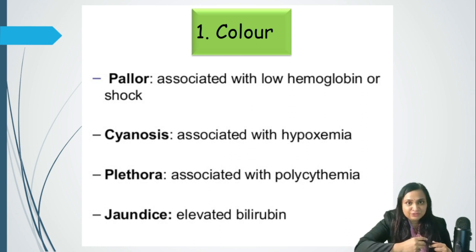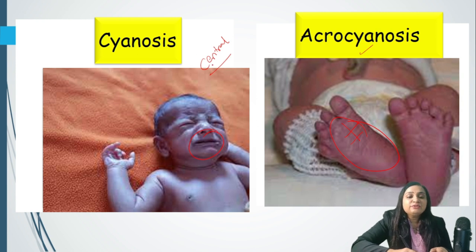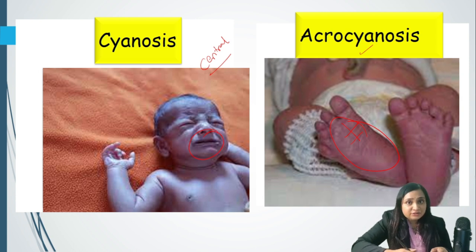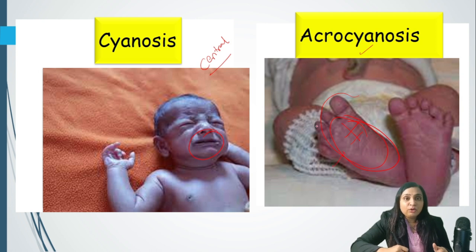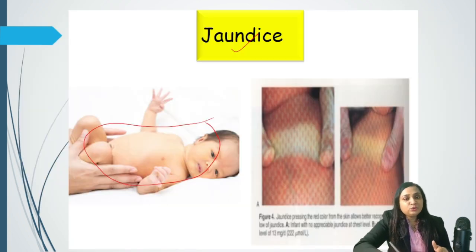In color, the important finding is cyanosis. If there is a bluish discoloration seen in a newborn, we need to differentiate whether it is central cyanosis or peripheral cyanosis. Central cyanosis could be due to congenital cyanotic heart disease or severe respiratory distress syndrome. Acrocyanosis could be physiological when the child has cold stress and mild hypothermia — the peripheral parts could be cold and blue. When the child is rewarmed, this cyanosis should disappear.